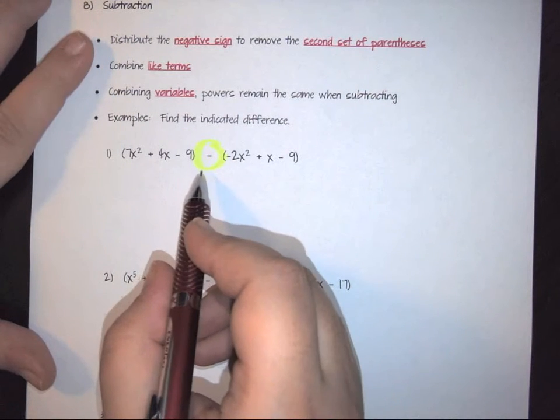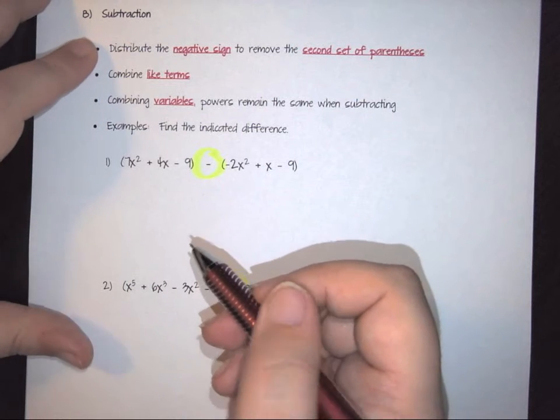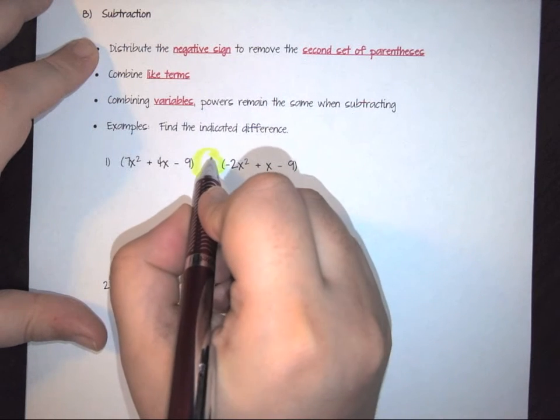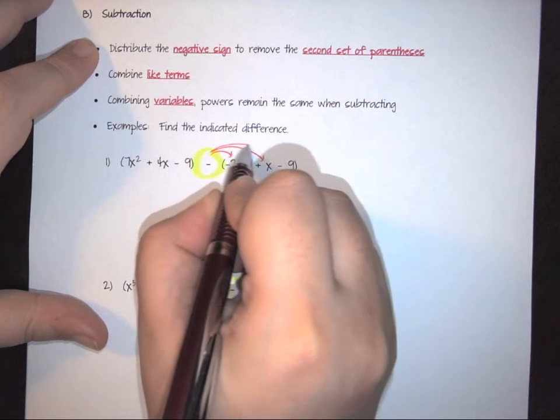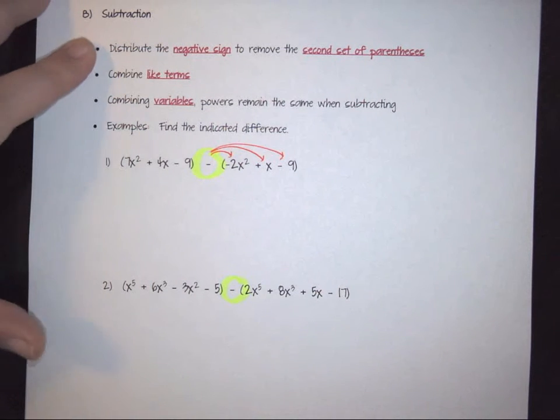So the first thing I have to do, just like we did with adding polynomials, is you need to distribute this negative sign through the back of my parenthesis here.